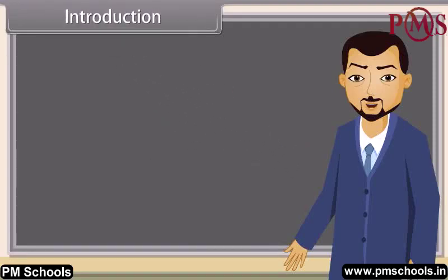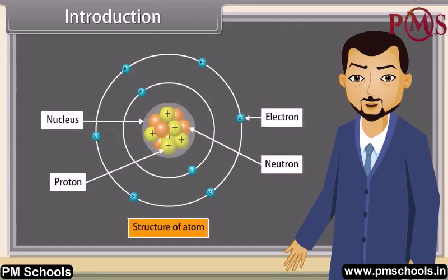Today I'll teach you the topic: structure of the atom. Atoms are the fundamental units of matter. Everything around us is made up of atoms. A typical atom consists of a nucleus of protons and neutrons, with electrons orbiting this nucleus.